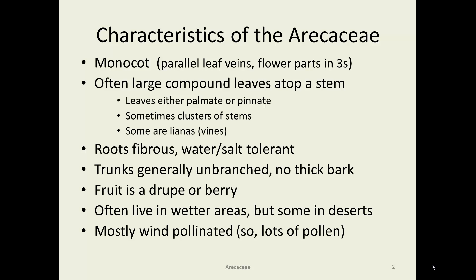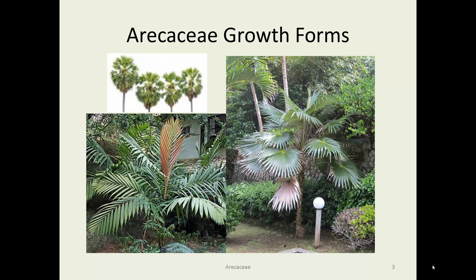The trunks are generally unbranched with no thick bark. The fruit is botanically called a drupe for coconuts, and for most of the rest of them it's technically a berry. They are generally wind pollinated, which means they produce lots and lots of pollen — nothing exotic to attract insects to carry the pollen somewhere else.